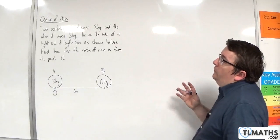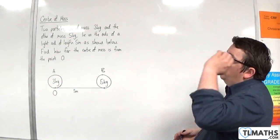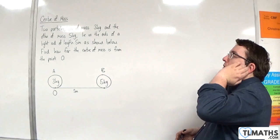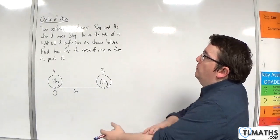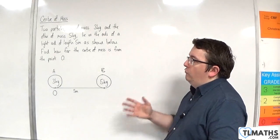So, in this video, we have two particles, one of mass 3 kilos and the other of mass 5 kilos, lie on the ends of a light rod of length 5 metres, as shown below. Find how far the centre of mass is from the point O.